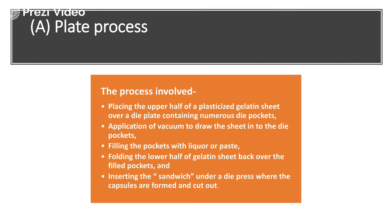Whatever needed to be encapsulated was filled up into that plate. Once the plate was filled with the material, another plate comprising the lower half of the gelatin sheet was placed over the filled pockets. Then with both the upper half and lower half placed over one another, the sandwich was inserted under a die process where the capsules were formed and later cut out.